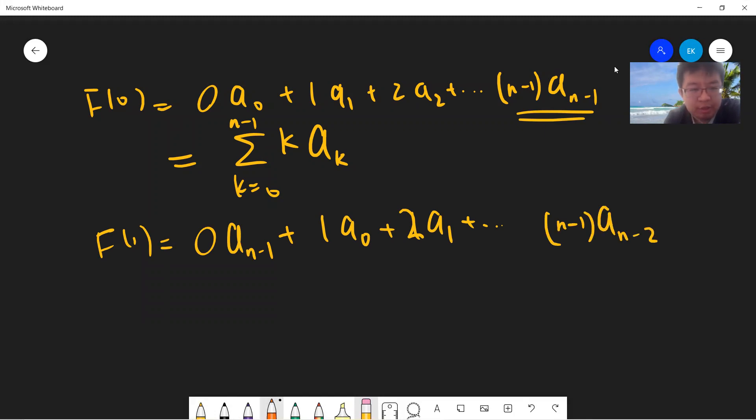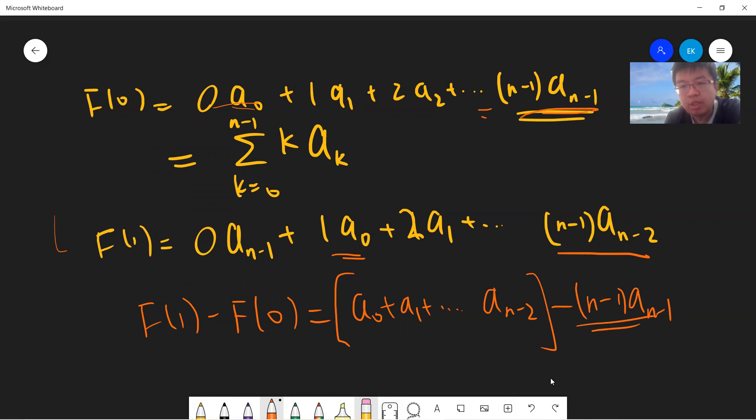Let's consider the difference. What is f(1) minus f(0)? Let's consider a_0. There is one term with a_0 and one with a_1, so you get a_0 plus a_1 up to a_(n-2). But minus a_(n-1), because there's no a_(n-1) term in the second one. So this will be your answer.